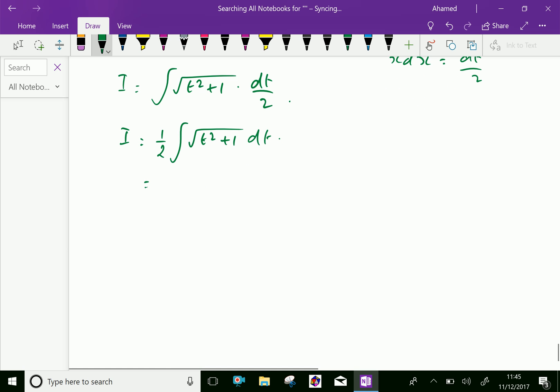Which equals one-half take out, t by 2 times square root of t squared plus 1, plus one-half log of t plus square root of t squared plus 1, plus c.